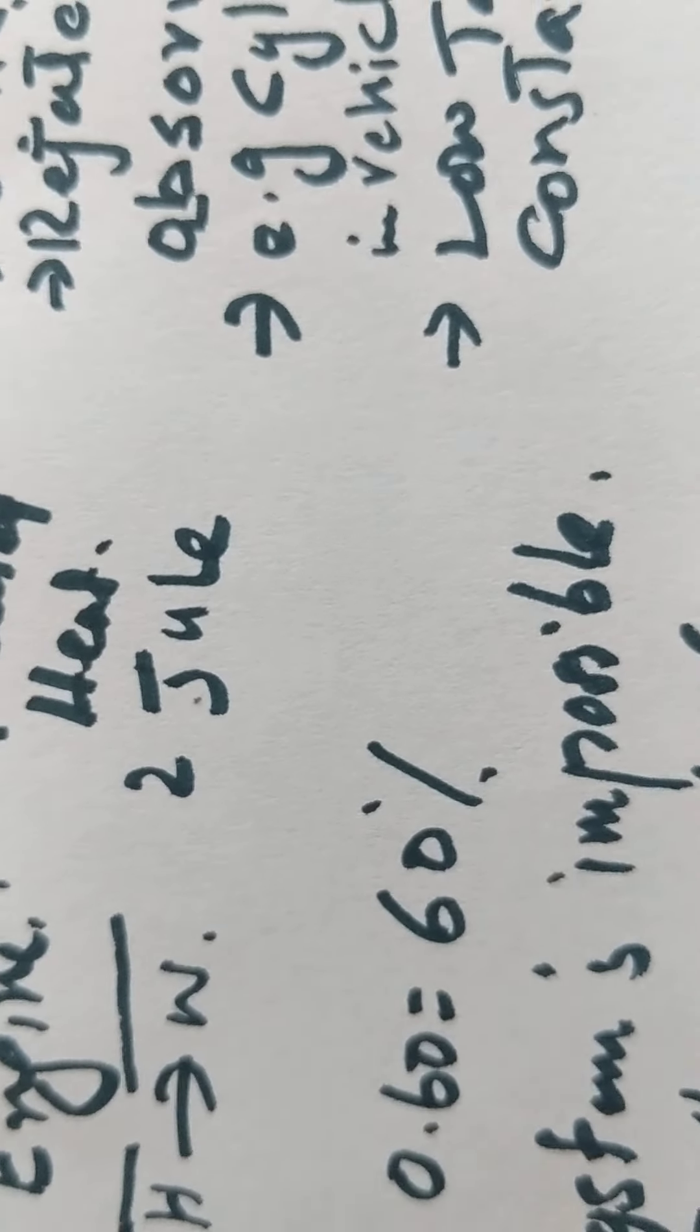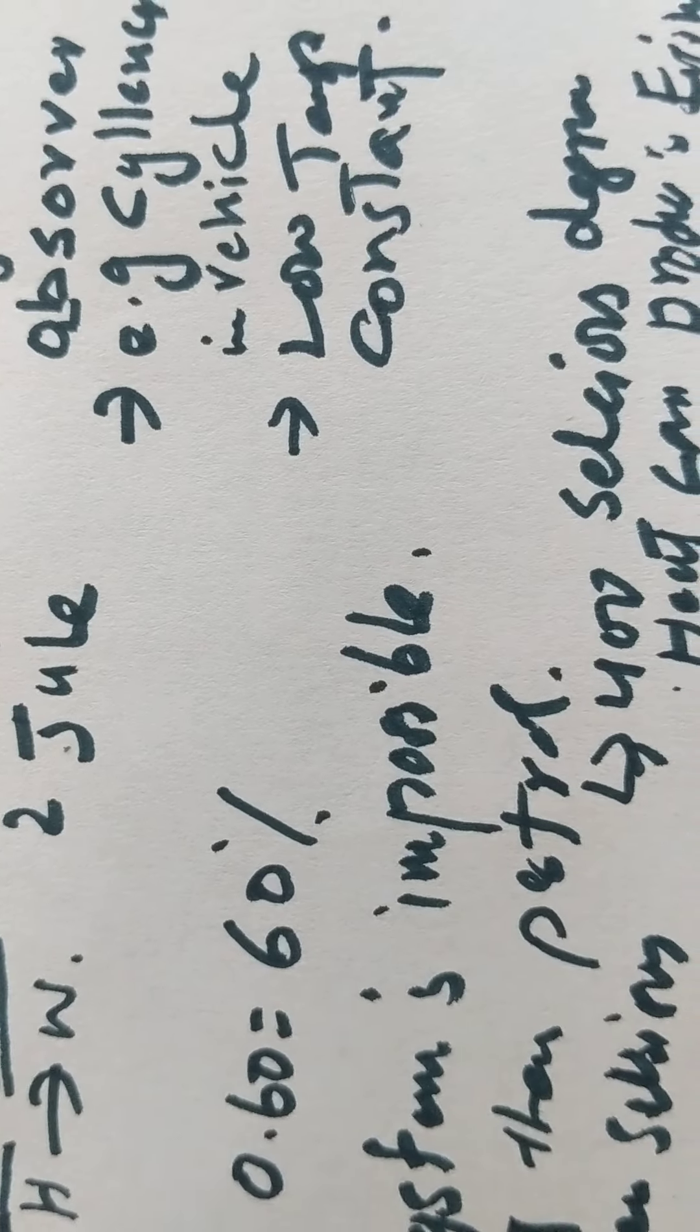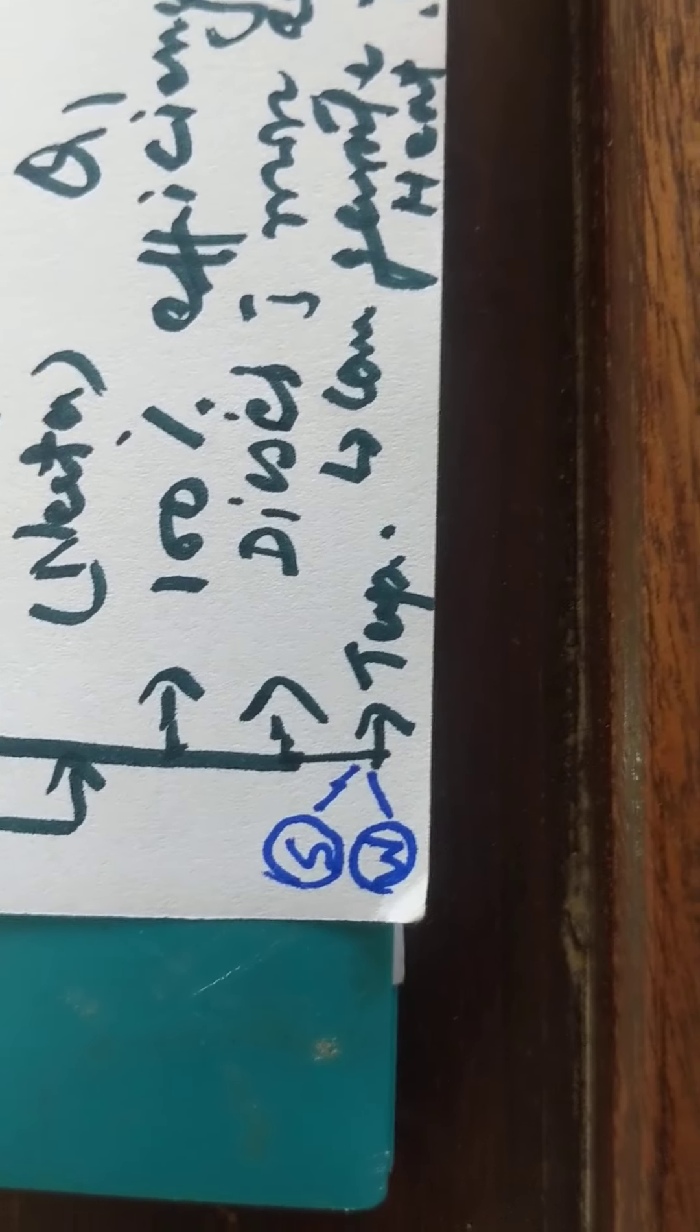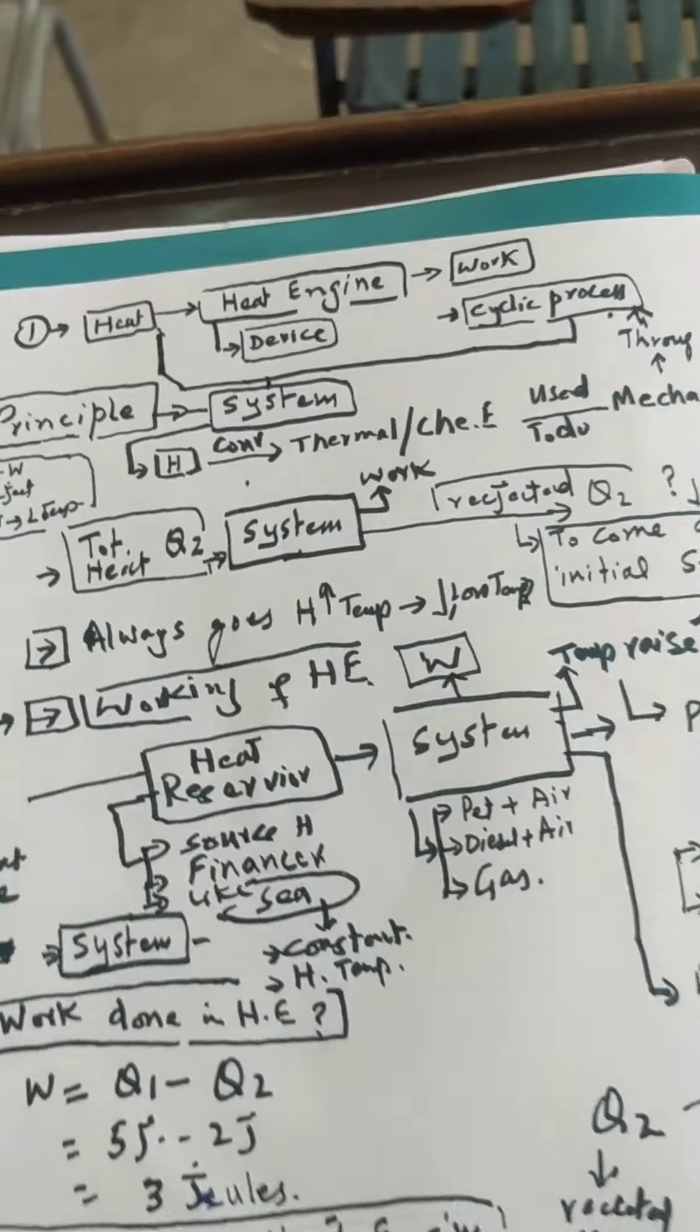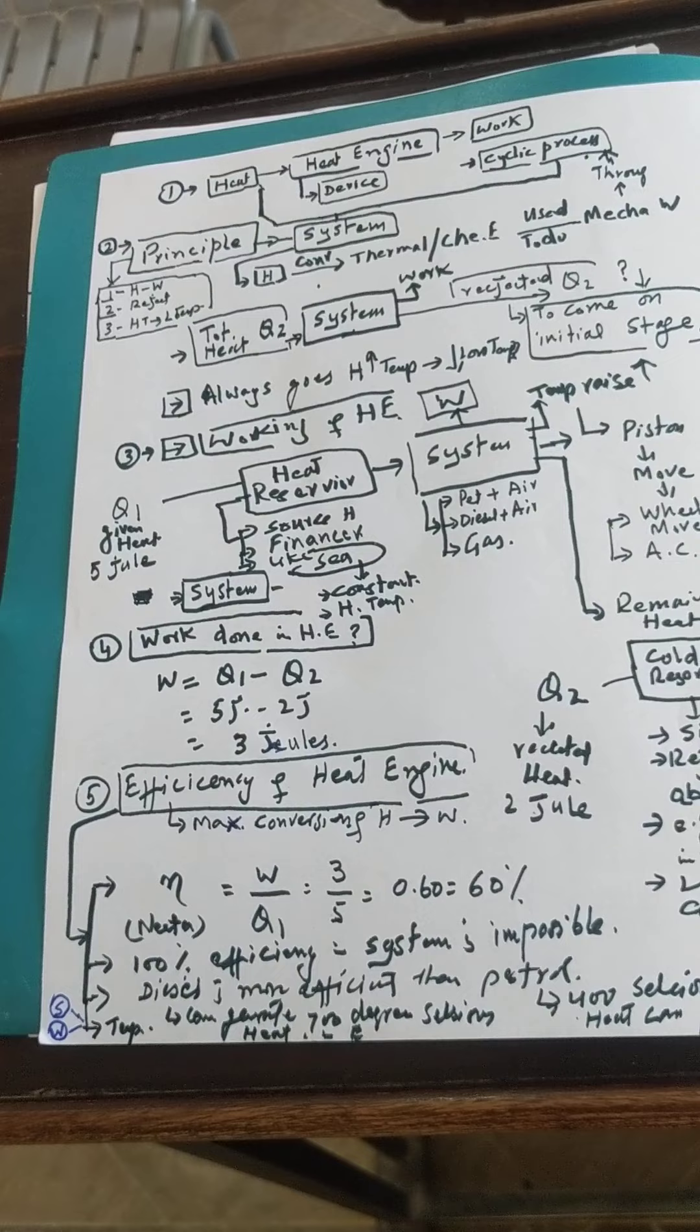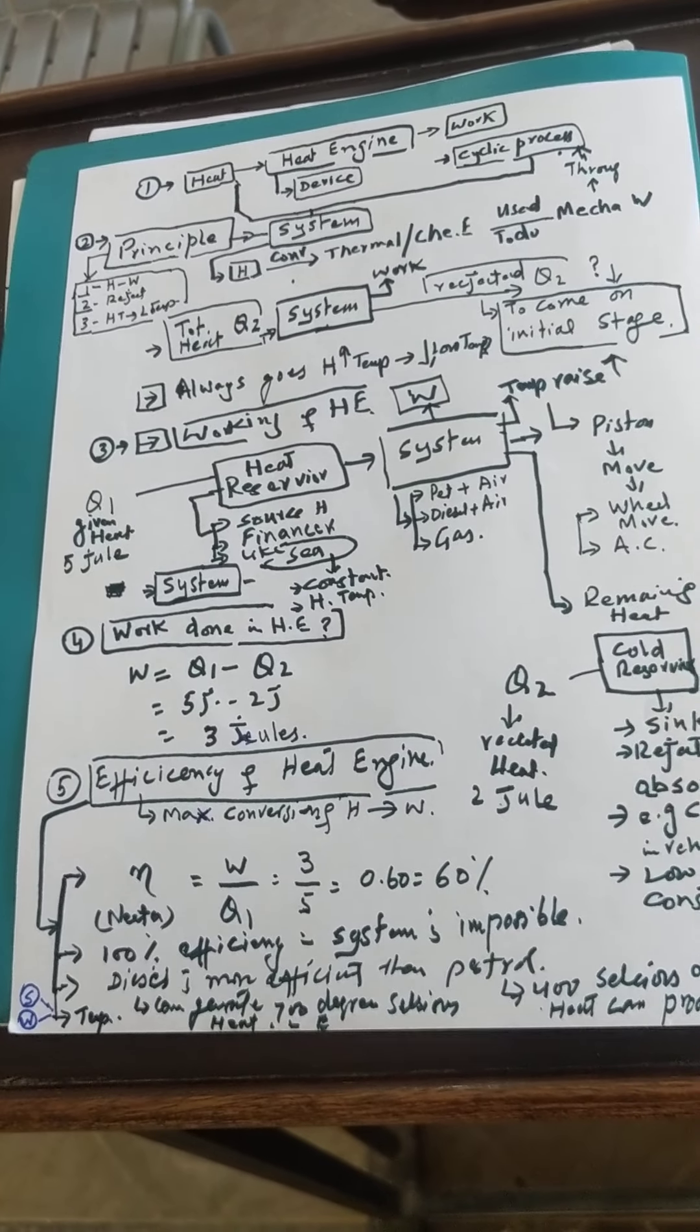When the external temperature is low, efficiency is higher. Our body - human beings also behave like a heat engine. As we know, our efficiency in summer season is less compared to winter. So this was all about heat engine: its working principle, work done, and efficiency. Thank you.